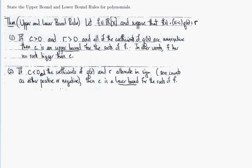State the upper bound and lower bound rules for polynomials. This is a way of eliminating candidates of roots when attempting to factor a polynomial.